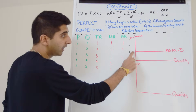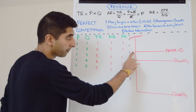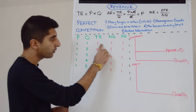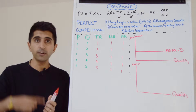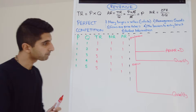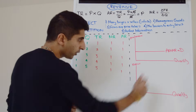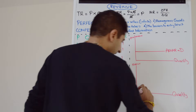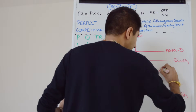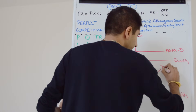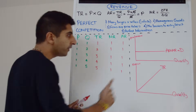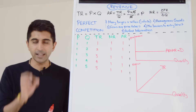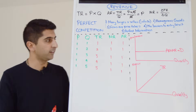If I had to put a figure here, that figure would be one pound. What about total revenue? We can see that total revenue is increasing, but always increasing by one. So therefore, if we're drawing our total revenue curve, it's going to be a linear upward sloping line showing a constant gradient, always increasing by one.